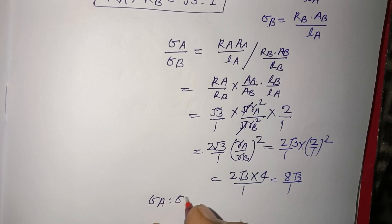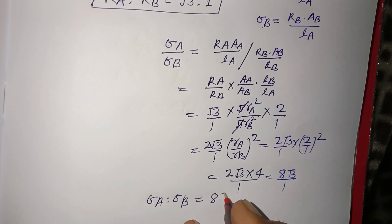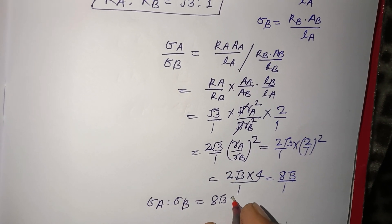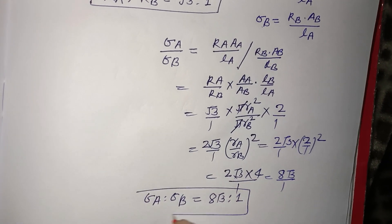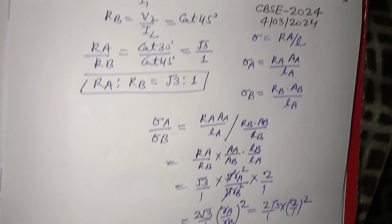σA/σB = 8√3:1. So this is the ratio of resistivity and the previous was the ratio of resistance.